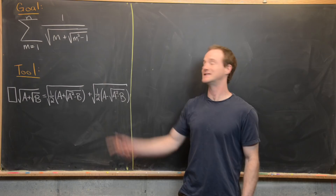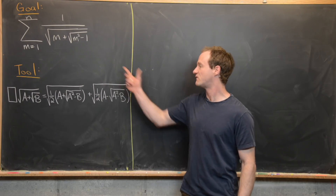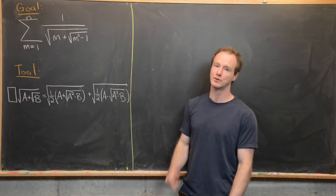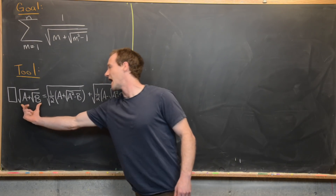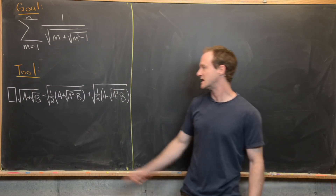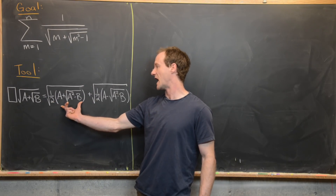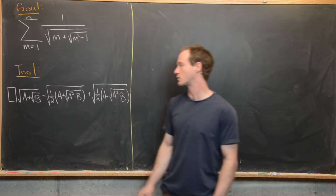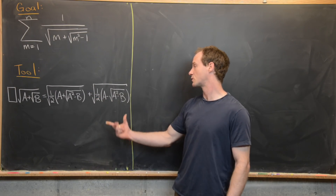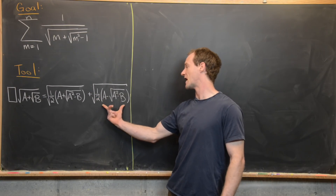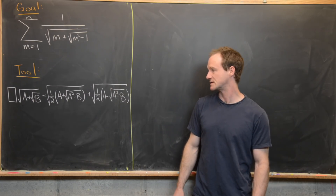We're going to use a trick to denest the radical in the denominator. It follows from this formula, which we will prove: the square root of a plus the square root of b equals the square root of one-half times the quantity a plus the square root of a squared minus b, plus the square root of one-half times the quantity a minus the square root of a squared minus b.